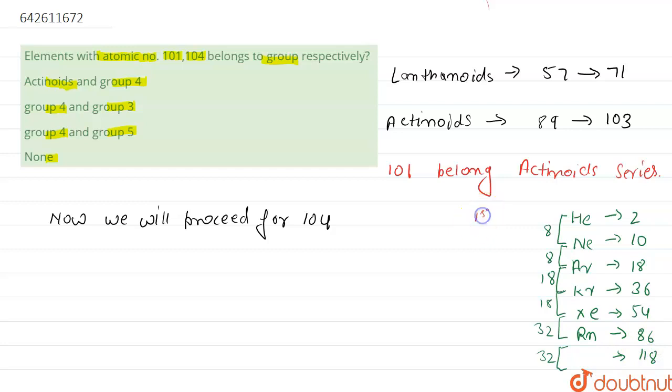We know that helium belongs to 1st period, neon to 2nd, argon to 3rd, krypton to 4th, xenon to 5th period, radon to 6th period.